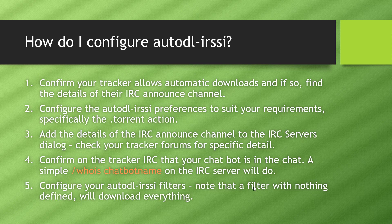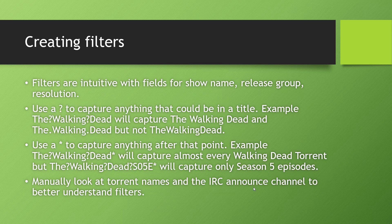Now let's take a look at some filter examples. I find creating filters on Auto DL iRSSI and rtorrent is pretty intuitive — the fields are clearly defined with show name, season, release group, encoder type, and resolution. However, what isn't so obvious is that you can use a question mark and an asterisk as wildcards. For example, typing 'The Walking Dead' with question marks between each of the three words will capture it where a space, dot, or underscore separates those words, but it wouldn't capture it without any separators between the words.